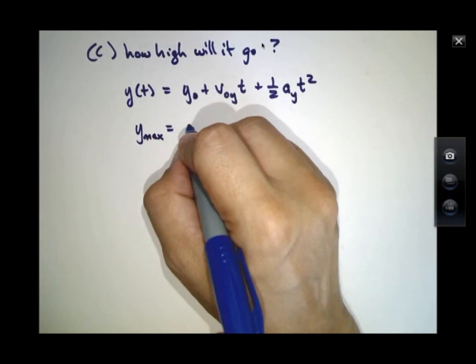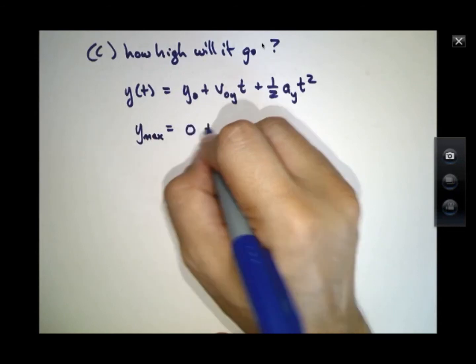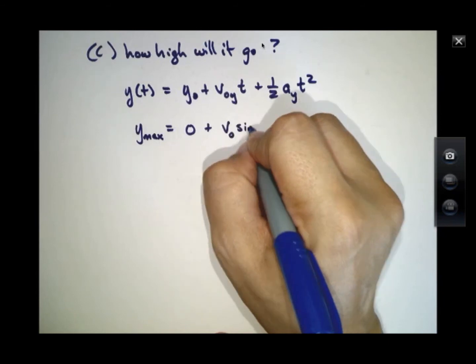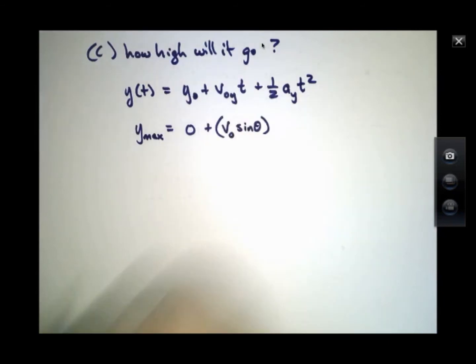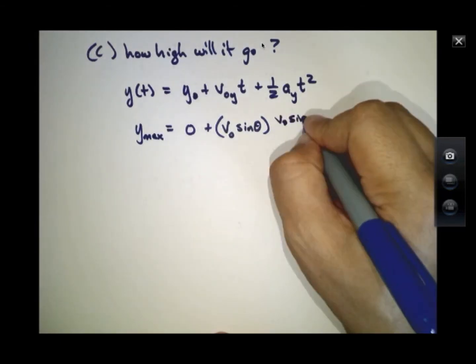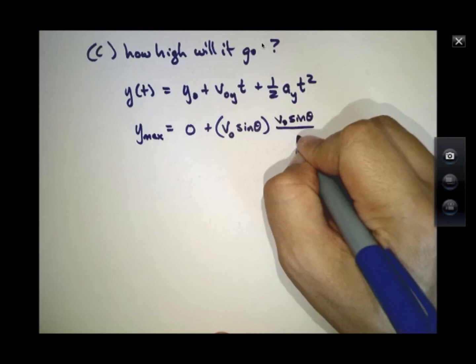The initial y is zero because we're starting out at the ground. This initial speed in the y direction is v₀ sin θ. And the time that we're going to insert here is the time that we calculate at the very beginning, in other words, the time by which the speed in the y direction goes to zero. That time turned out to be v₀ sin θ over g.